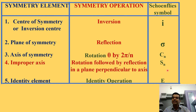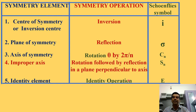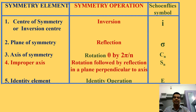The improper axis is represented by Sn. The fifth symmetry element is the identity element. The symmetry operation is called the identity operation — doing nothing on the molecule. When we don't carry out any operation, the molecule will be in the same configuration. It is represented by capital E.